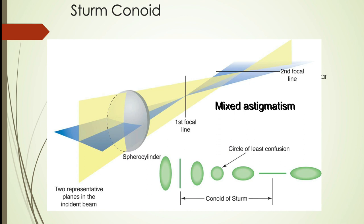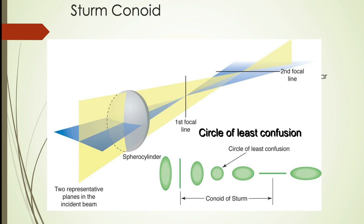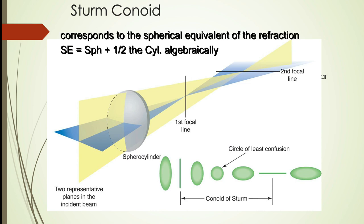At the midpoint between the first and second focal lines is a plane where the divergent horizontal beam and the convergent vertical beam show equal vergence, creating a perfect circle on cross section called the circle of least confusion, which creates a plane of least distortion of vision for the astigmatism patient. This also corresponds with the spherical equivalent of the refraction, which is the spherical correction plus half the cylindrical correction.